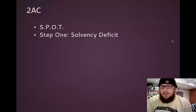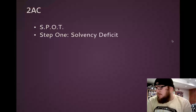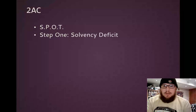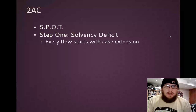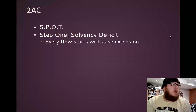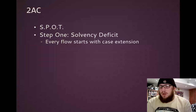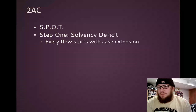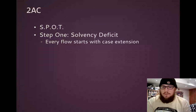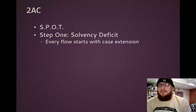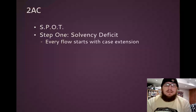So the first step, or the S in SPOT, is solvency deficit, which is essentially coming up with an argument as to why the affirmative solves the harms or the advantages of the affirmative case, and specific reasons why the counterplan may not solve.